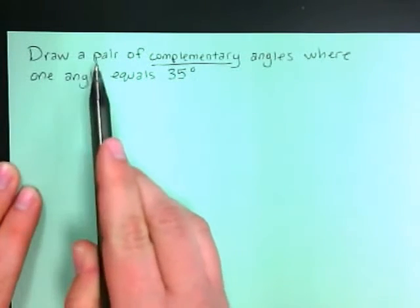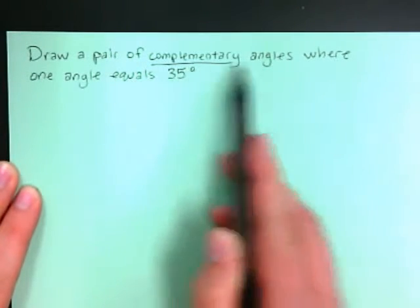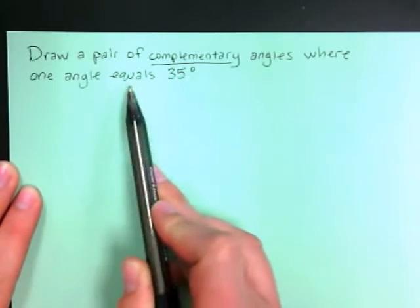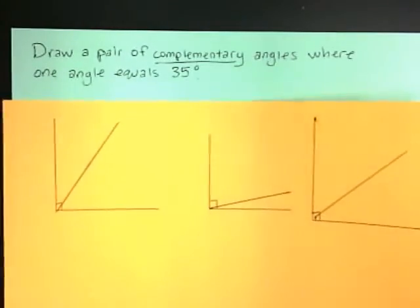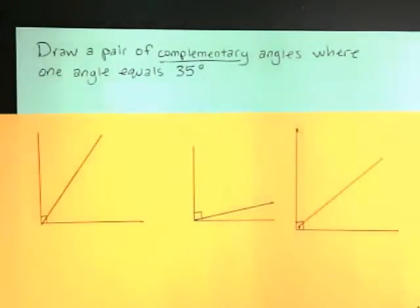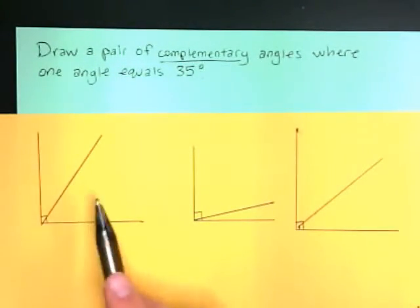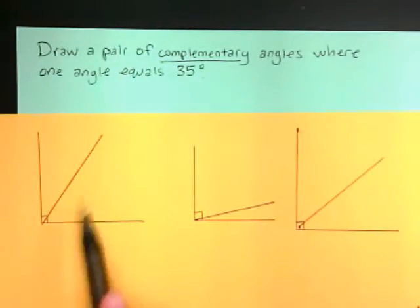This video is going to show us how to draw a pair of complementary angles where one angle equals 35 degrees. Now if you remember, complementary angles are two angles that add up to equal 90 degrees.